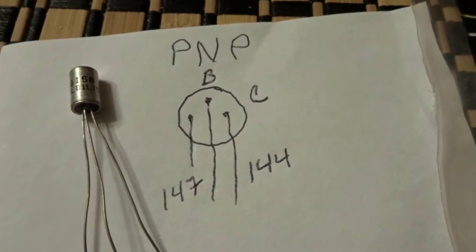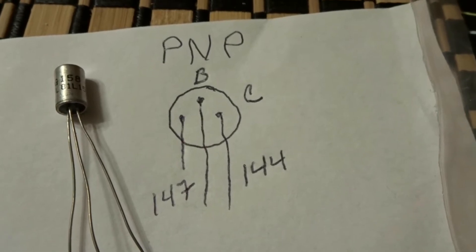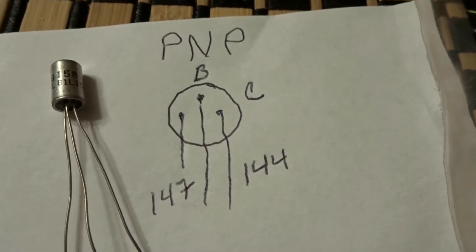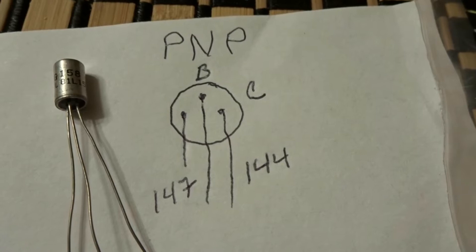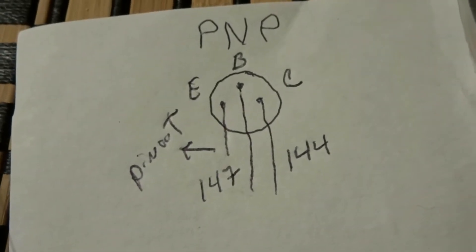Now the collector is always less than the emitter. So if you look there, I put a C for collector for the 144. Now we'll put E for emitter, and we know the emitter is pin out, so we wrote pin out with the E.